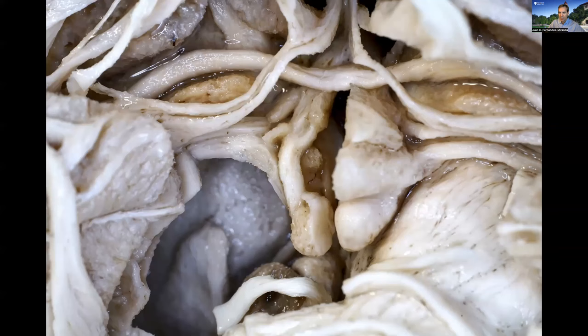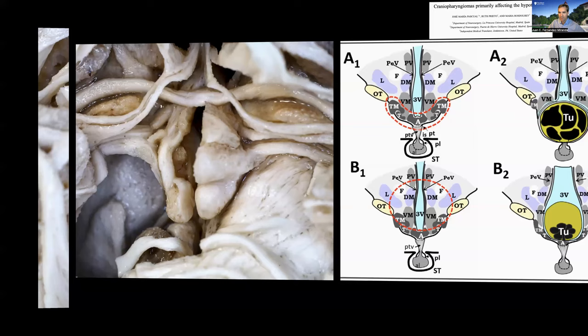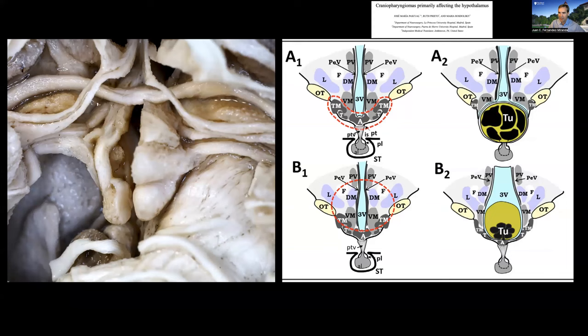These are dissections performed by Max Nunez in my lab — beautiful dissections of the hypothalamic region. You see the mammillary body here and the hypothalamic tissue. After removing the optic chiasm, we can see the nuclei of the hypothalamus, the fornix going down to the mammillary body, and the lateral hypothalamus. I asked Max to help us better understand the anatomy of the hypothalamus and the different nuclei, because this is key to understanding our dissection planes when dealing with craniopharyngiomas.